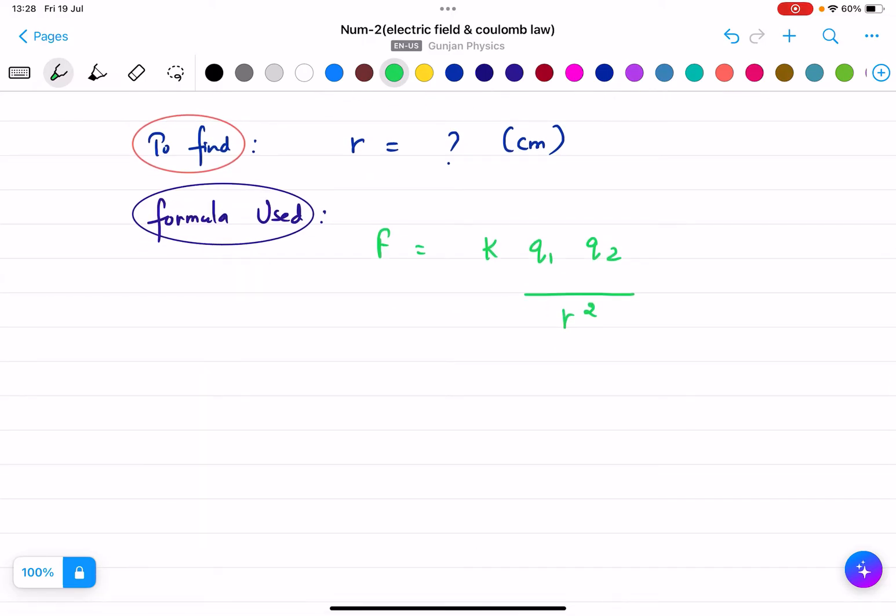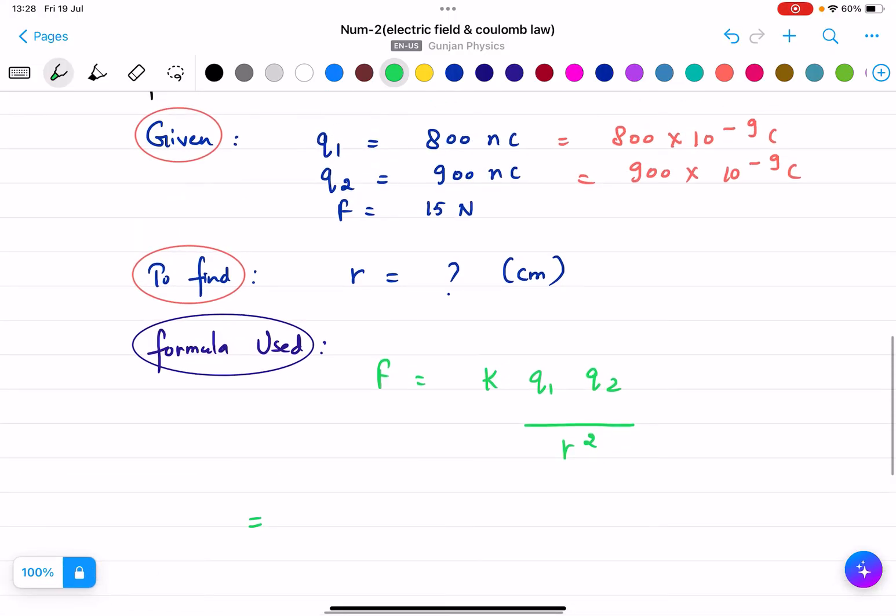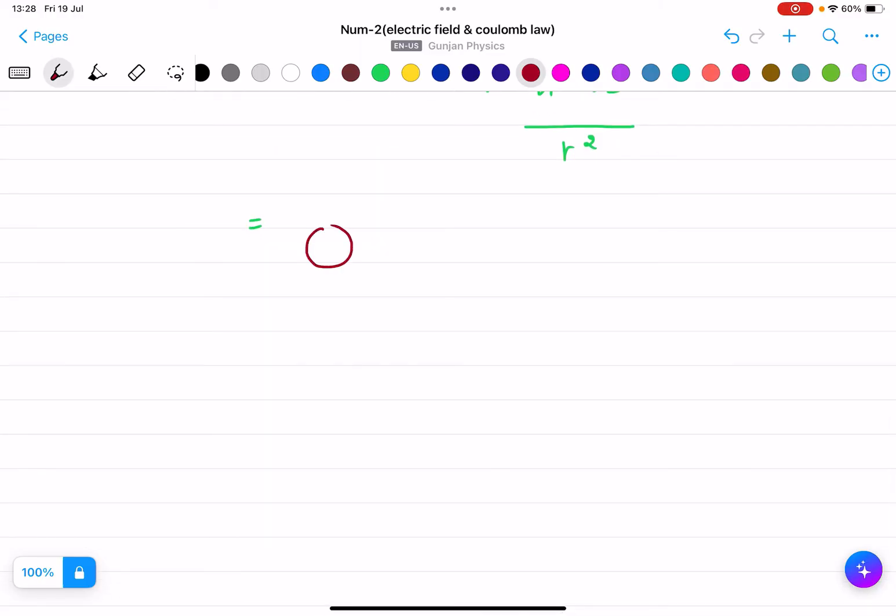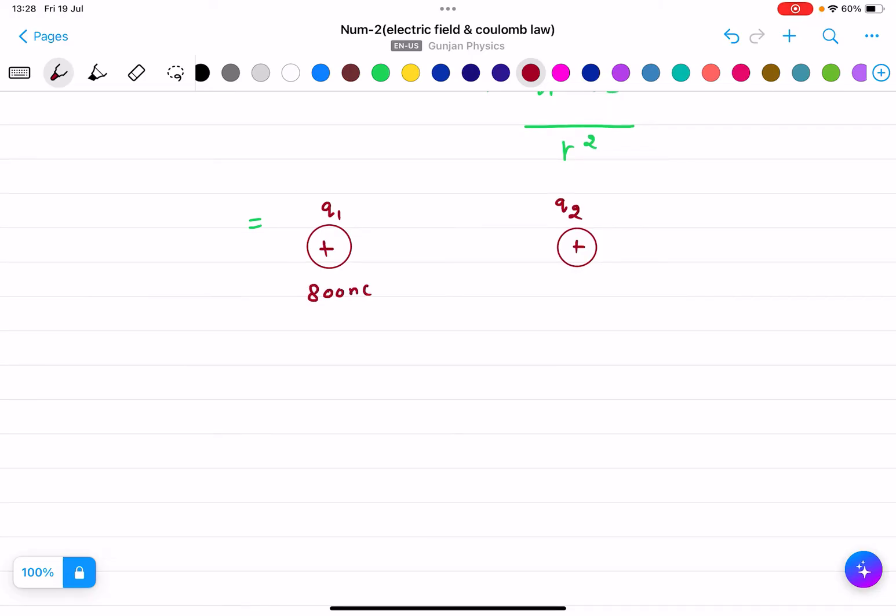So we will place the values now. We can make a pictorial first. Two charges are given to you: Q1, Q2. This is Q1, this is Q2, this is positive, this is positive. It is 800 nanocoulomb, it is 900 nanocoulomb. And the distance we need to find, and the force is 15 newtons.